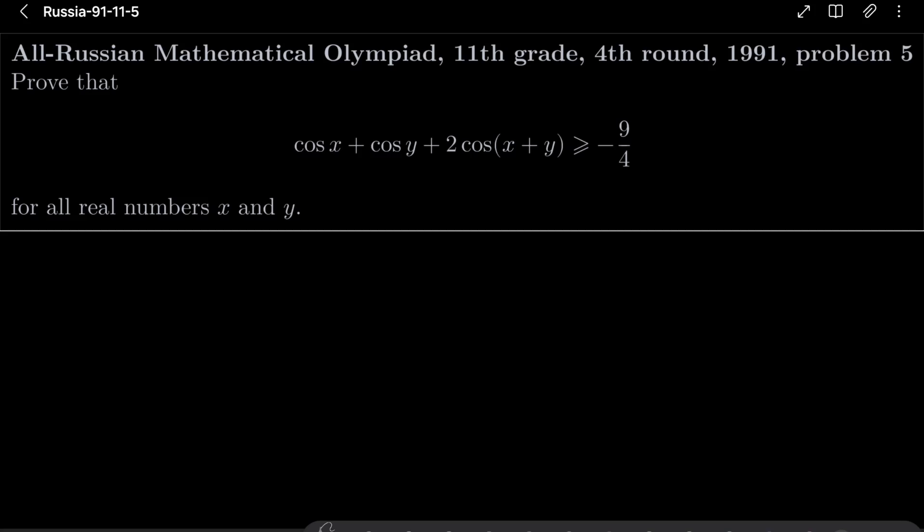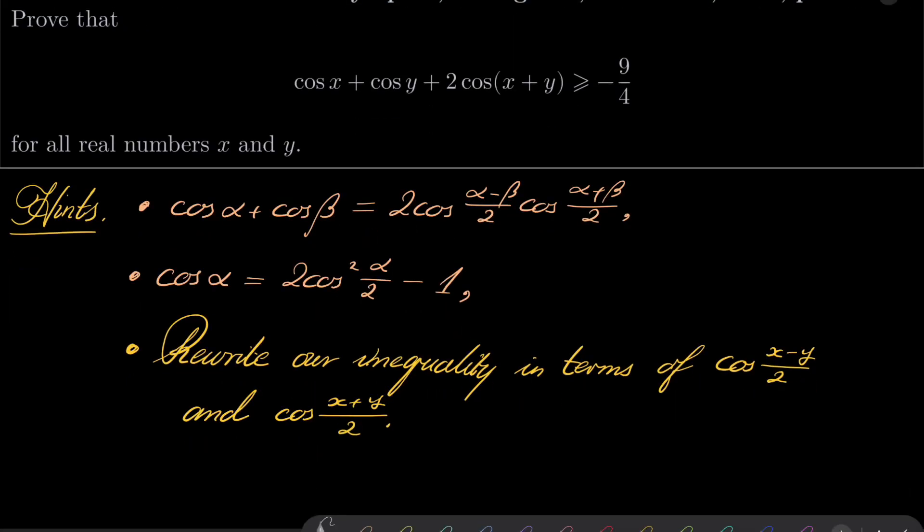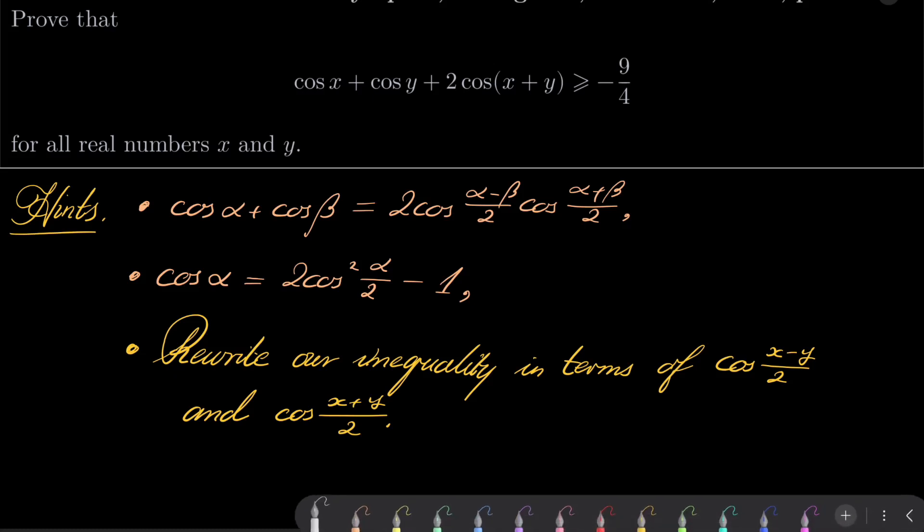So here are my hints for this problem. It's all about these two identities: cosine of alpha plus cosine of beta equals 2 cosine of (alpha minus beta) over 2 cosine of (alpha plus beta) over 2, and cosine of alpha can be written as 2 times cosine squared of (alpha over 2) minus 1. Using these two identities, try to rewrite our inequality in terms of cosine of (x minus y) over 2 and cosine of (x plus y) over 2. So give this problem a try.